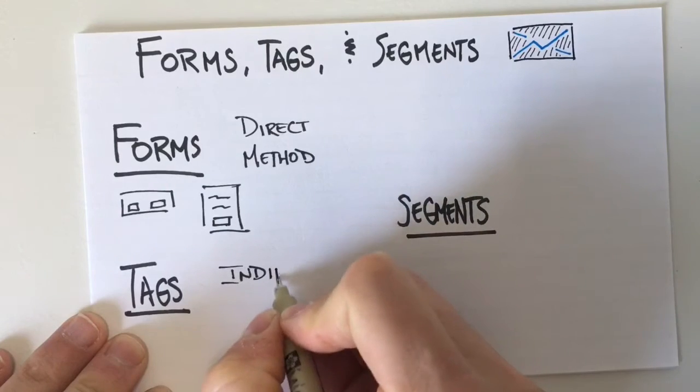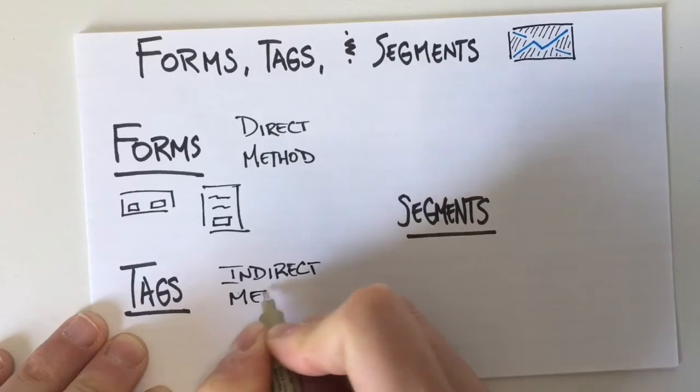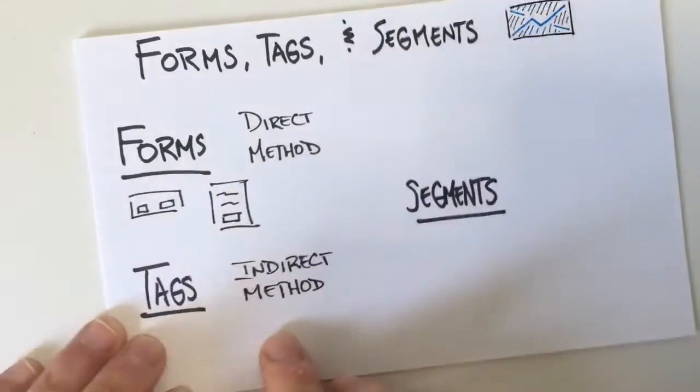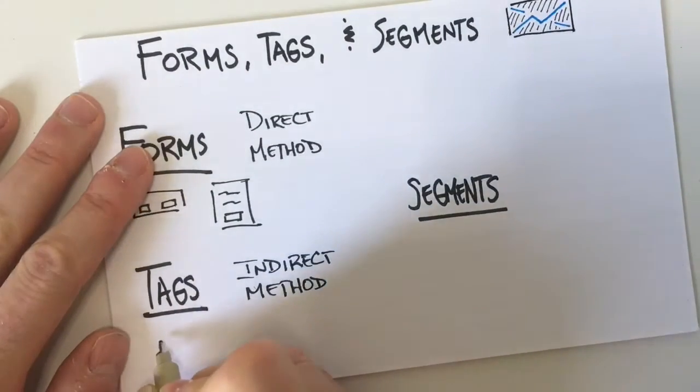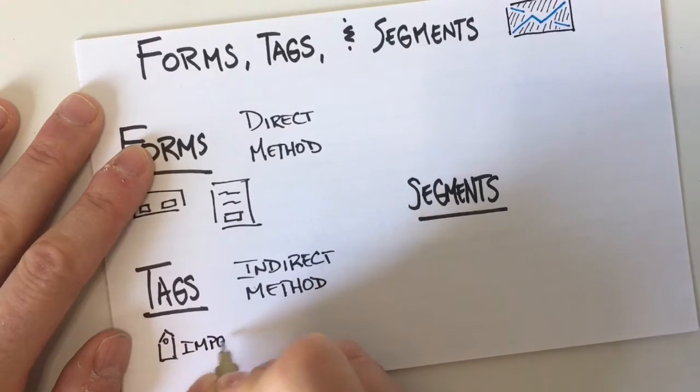A tag is more of an indirect method. So they're still signing up, they still know that they're joining your email account, but it's usually more like they are being imported from a previous list or maybe they purchased something from you.